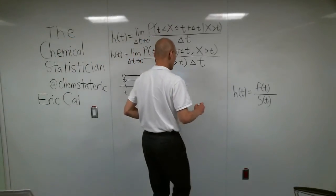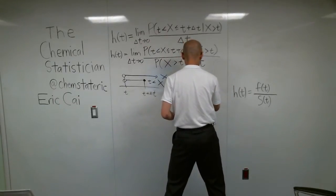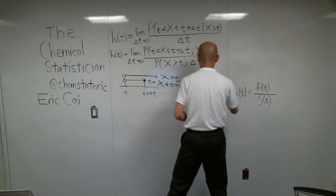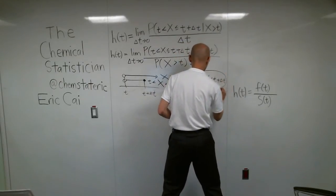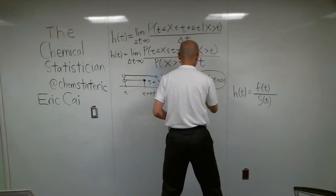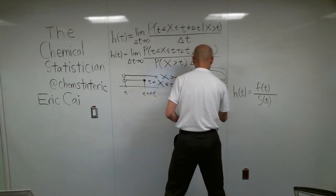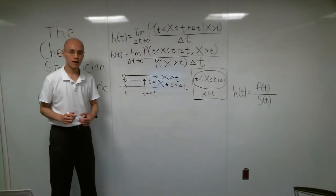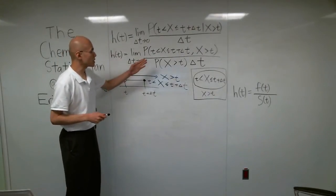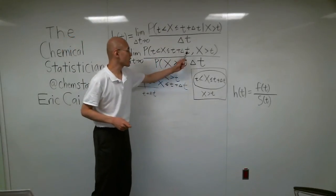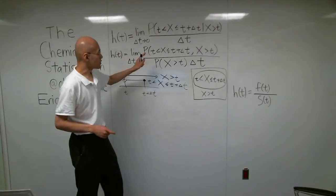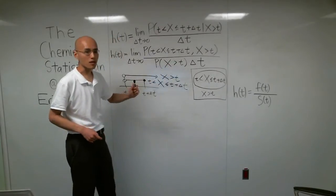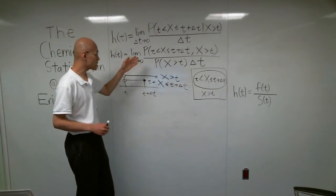So, to illustrate this, you can draw a Venn diagram for yourself. Here is the event x is between t and t plus delta t, and I will draw an oval around that. And in this rectangle we have the event x is bigger than t. If this event is a subset of this event, then this joint probability of these two events is simply the probability of this first event. So, we can simplify that numerator.